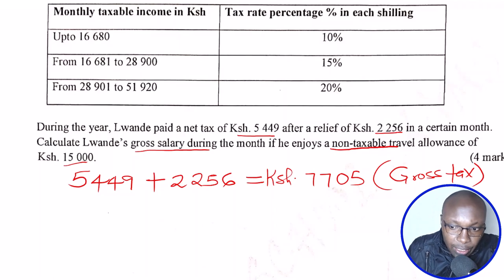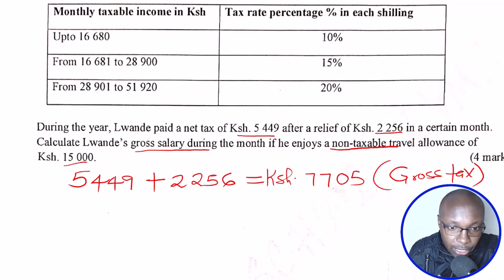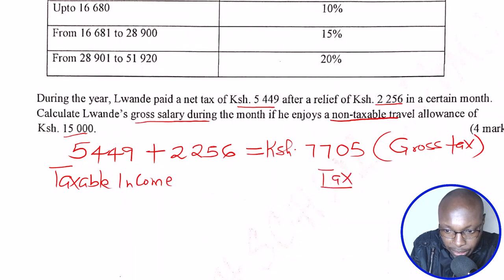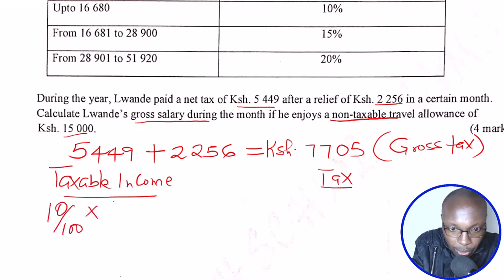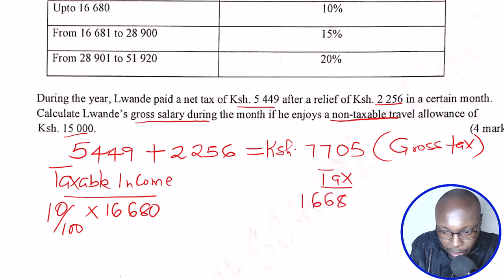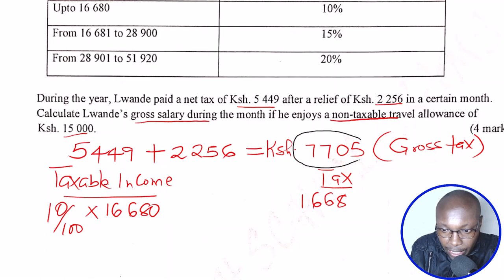After getting that, we want to get the income that was taxed in order to get this gross tax, and we are going to go through the taxation bands. We shall have taxable income on one side and the tax on the other. For the first band at 10%, that band is 16,680. When you do that taxation, you get 1,668 Kenyan shillings. We are taxing until the point that we shall have the total tax of 7,705.